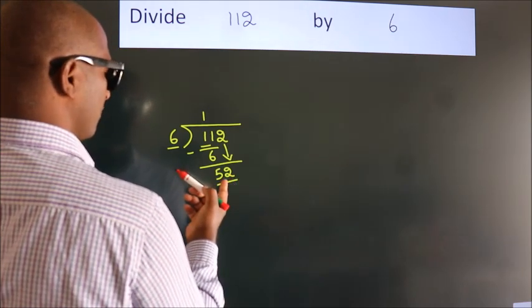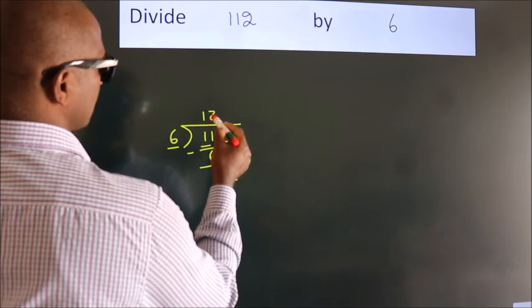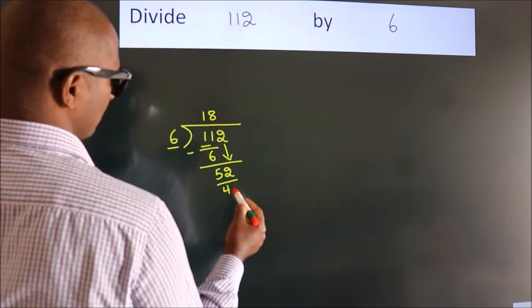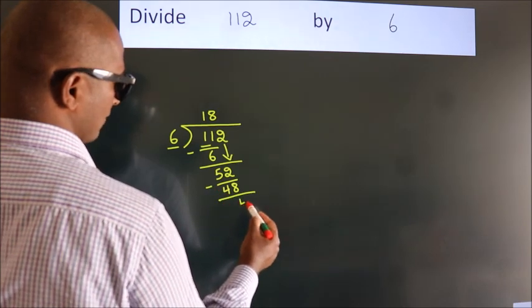A number close to 52 in the 6 table is 6 times 8, 48. Now we subtract. We get 4.